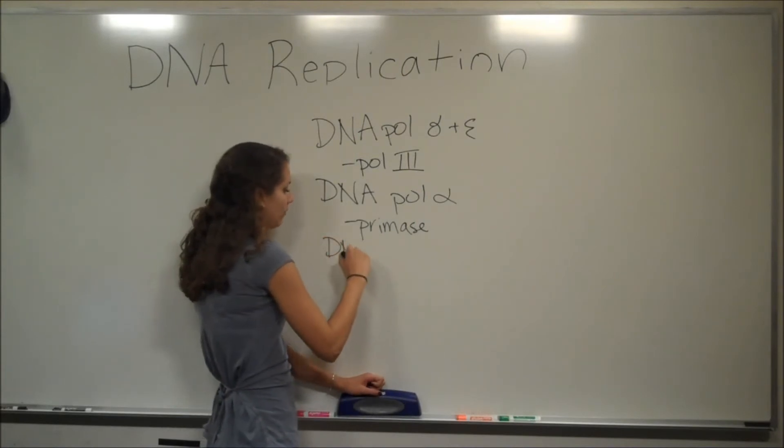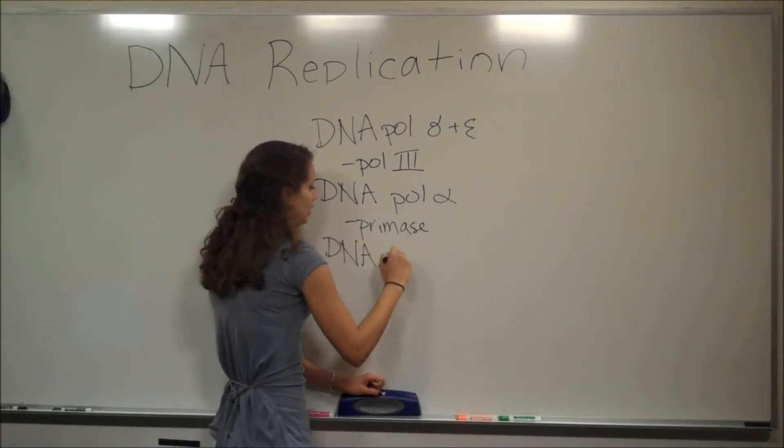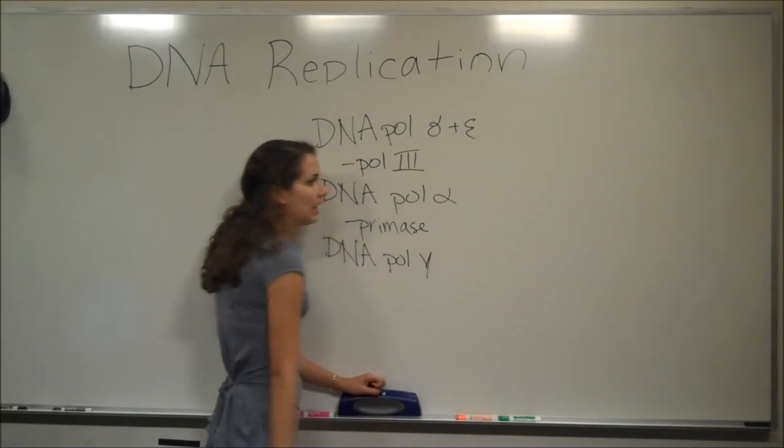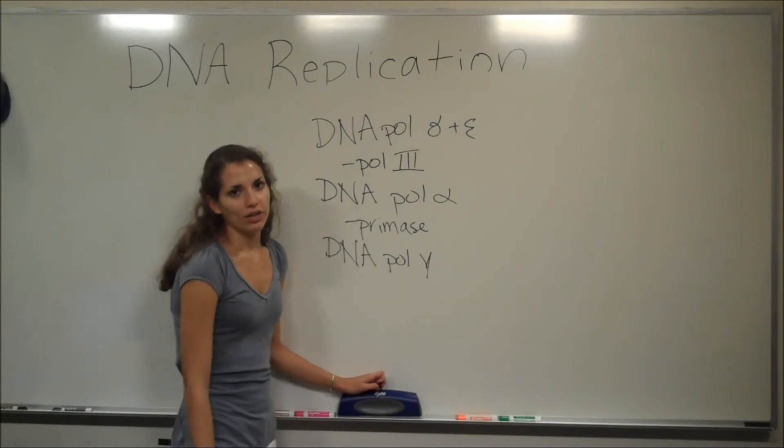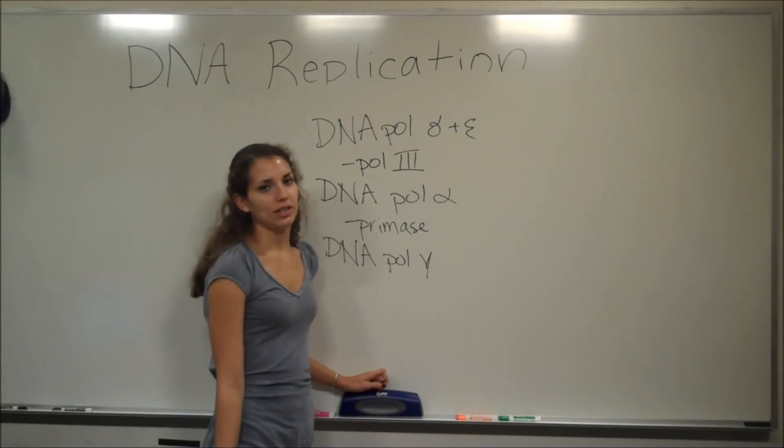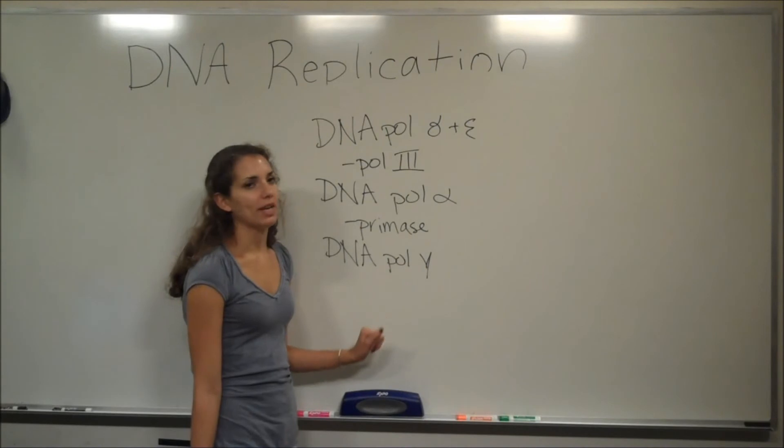And eukaryotes also have a DNA polymerase gamma. And this is responsible for mitochondrial genome replication. Mitochondria have their own set of mitochondrial DNA, and this is what replicates that.